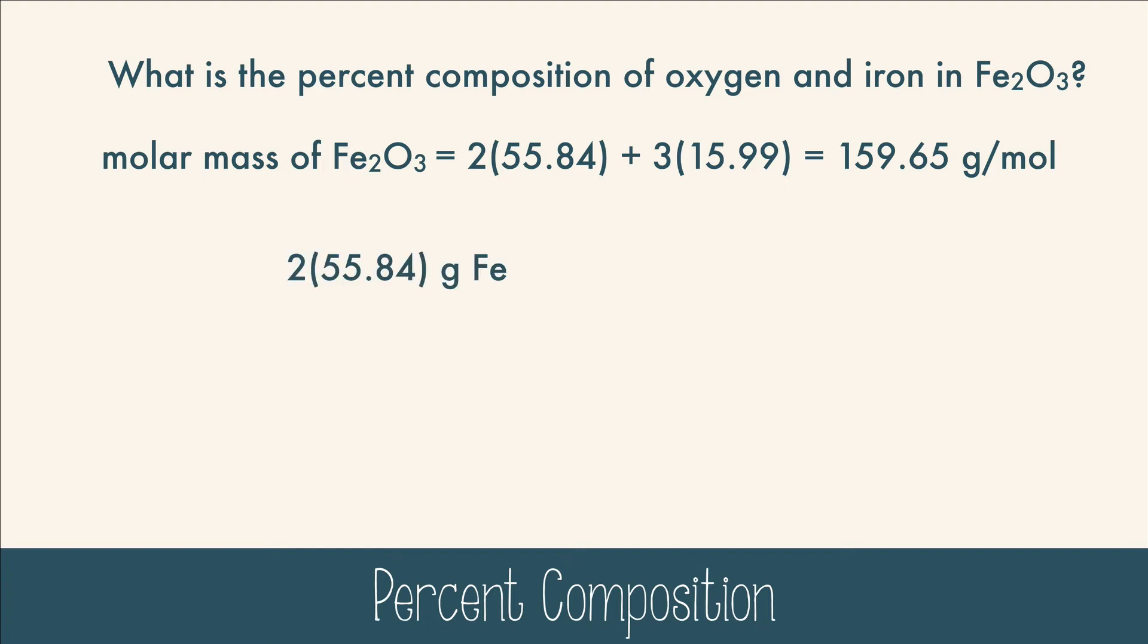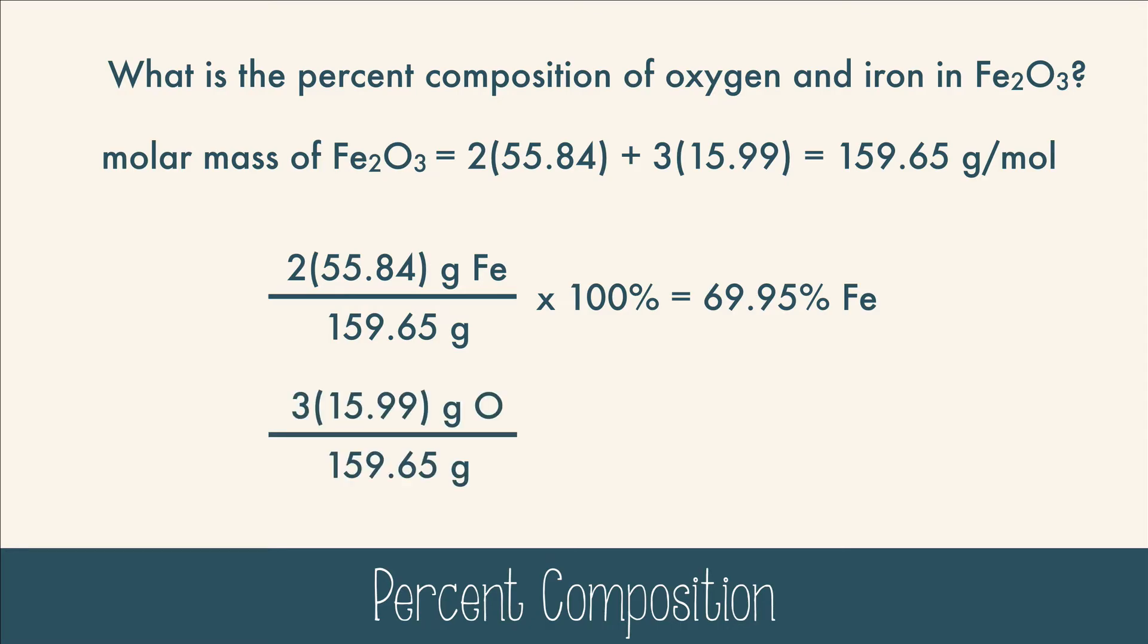Then you take the mass of the two irons and divide by the total. Multiply by 100 and you get 69.95% iron. Take 3 times the mass of oxygen, divide by the total, and multiply by 100 to get 30.05% oxygen.